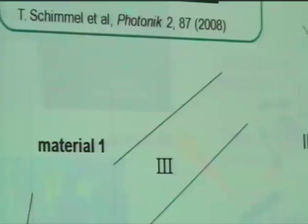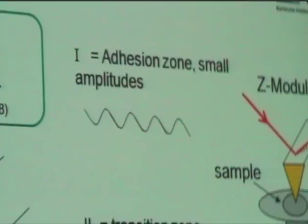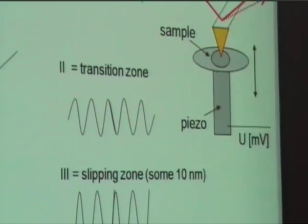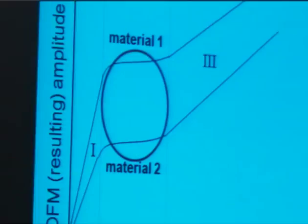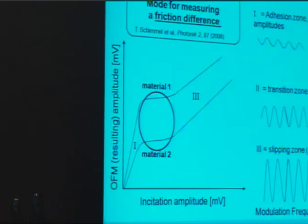Recently a new AFM mode was developed called OFM, or oscillation friction mode. This is a mode with which we can image friction properties of the surface independent of topography effects. The sample is oscillated sinusoidally, and for small amplitudes the tip will adhere to the surface. For larger amplitudes of some tens of nanometers the tip will slide on the surface, but between these two zones there is a transition zone where we are sensitive to friction measurements because the tip starts to rub on the surface. As we know from former studies, carbon materials show much lower friction compared to other materials, so we thought we could distinguish the location of the first carbon deposition on the catalyst surface.